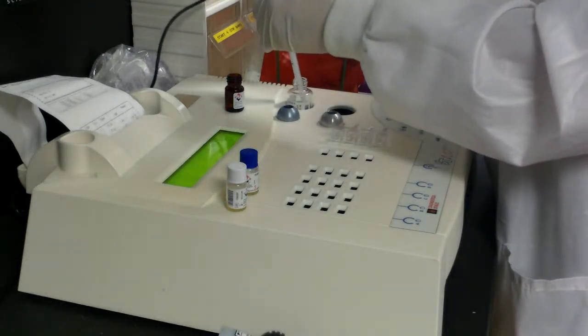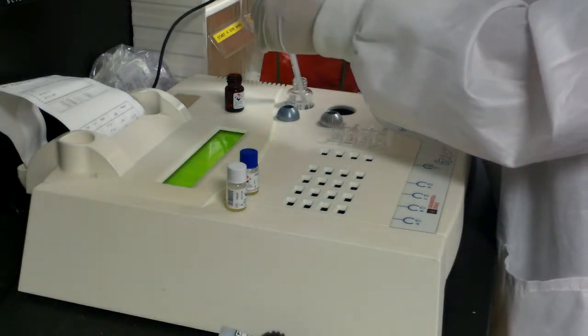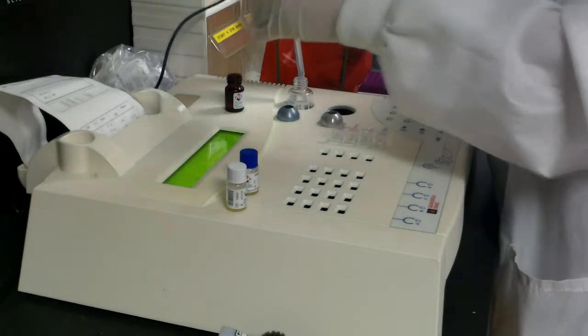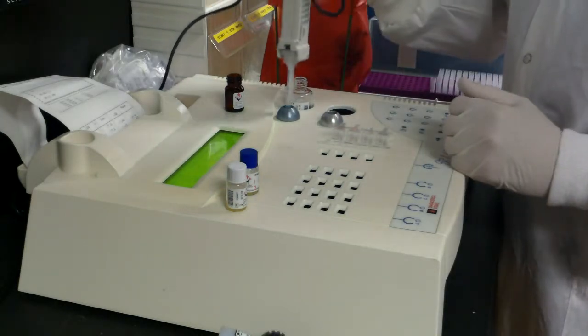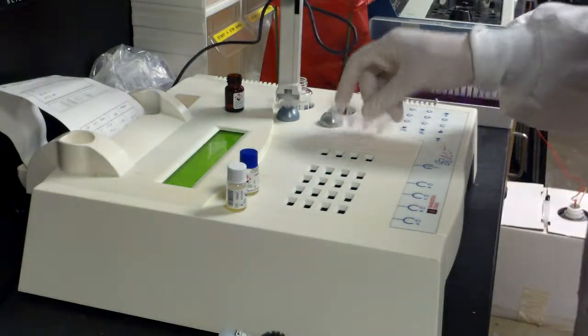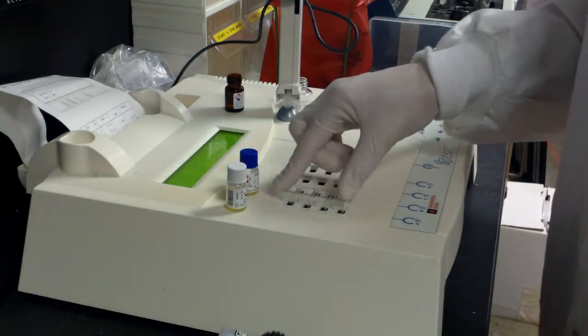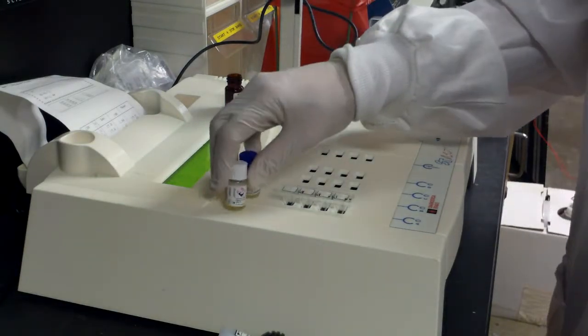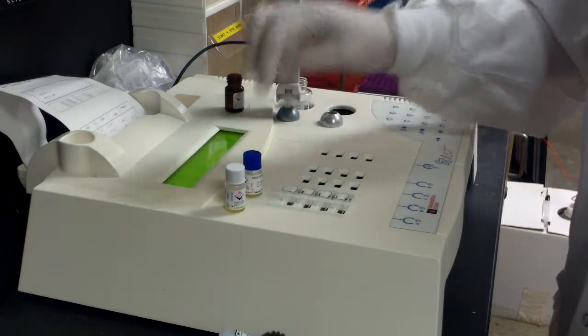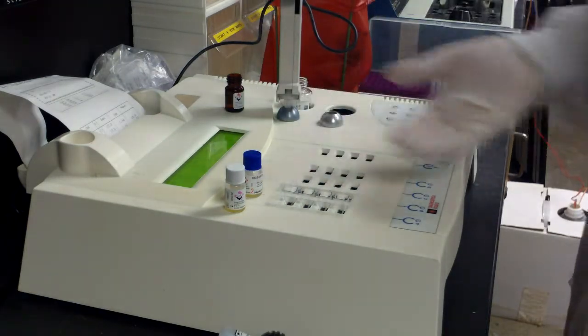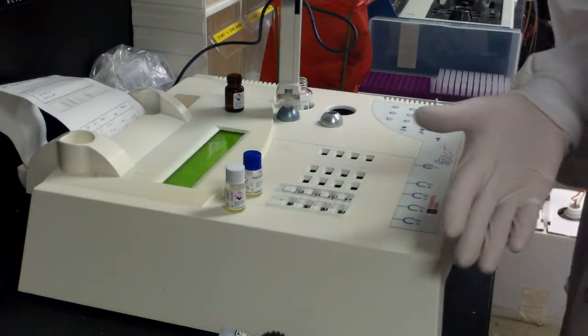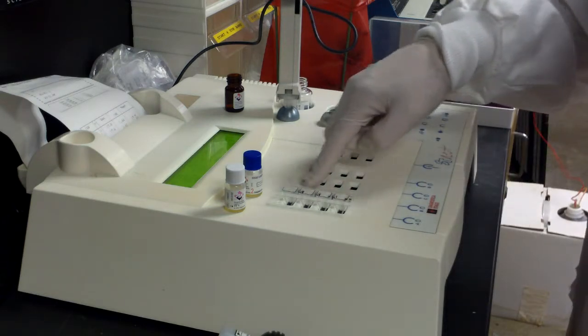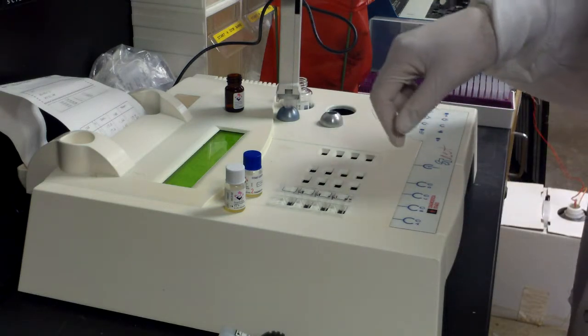You're going to put the cuvette into well A. Once again, today we're just going to do two normal and two abnormal controls. The patients would be run the exact same way - you could do a cuvette and put patient one in two of them, patient two in two of them.